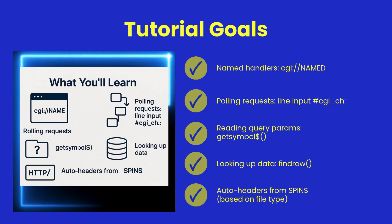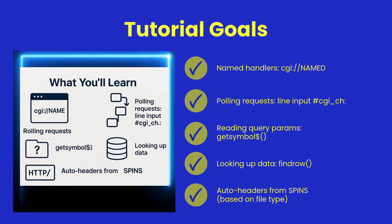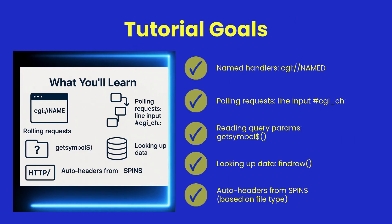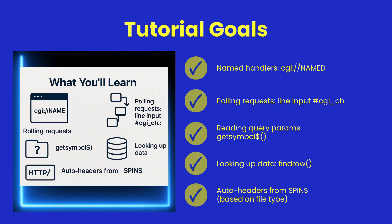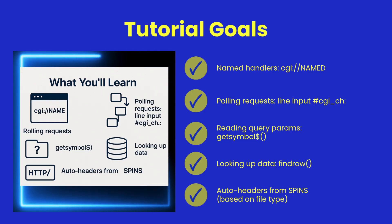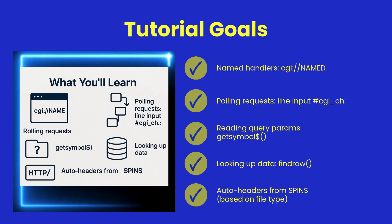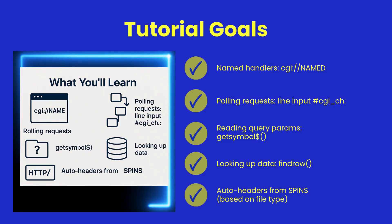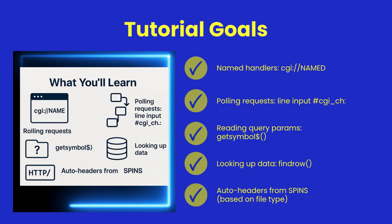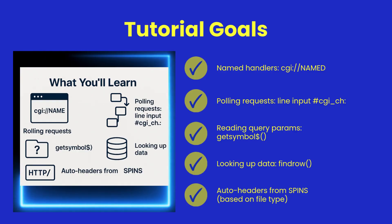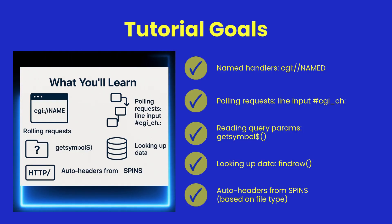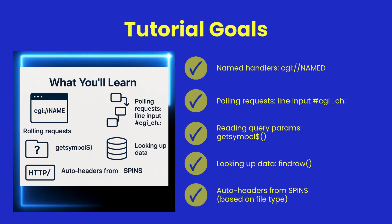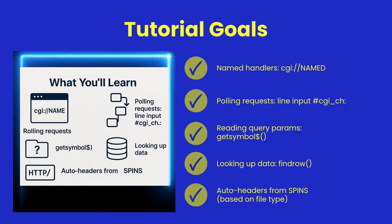This tutorial shows you how to build a simple REST endpoint with FastCGI. We'll cover named handlers, polling request queues, extracting query parameters with getSymbol$, looking up rows efficiently with findRow, and how spins automatically supplies headers.